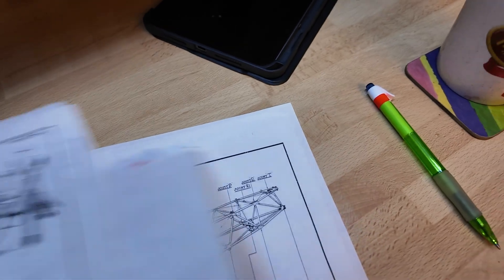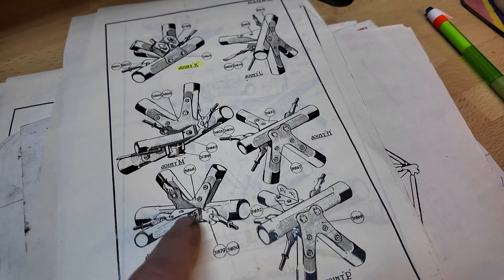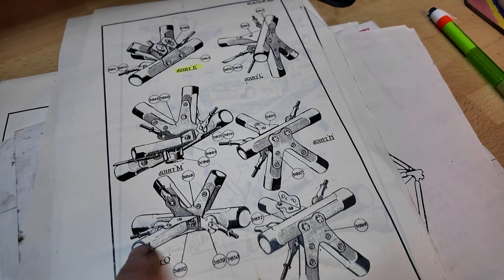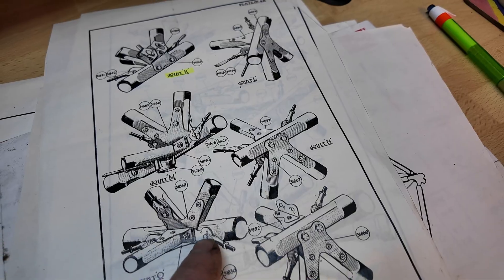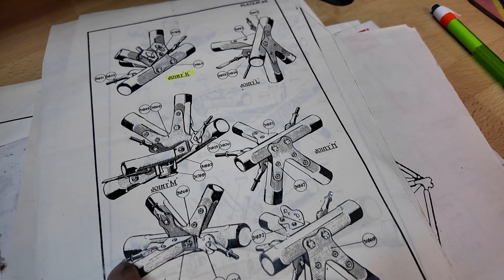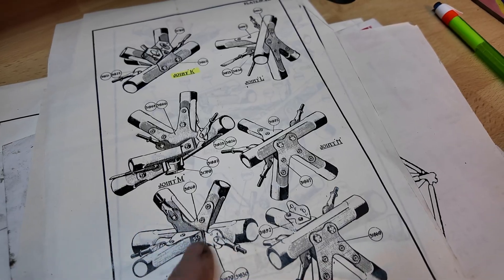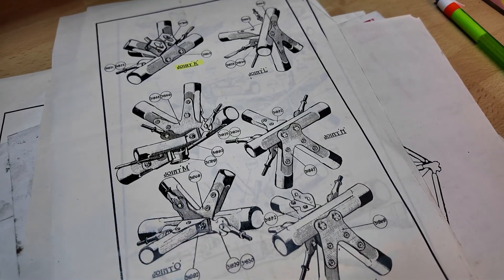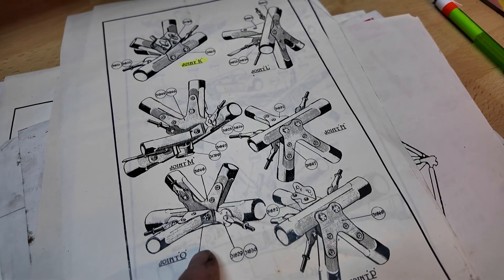So this is joint O. So what you've got is this is OO, which goes between the two O's. And then you've got these lugs for the bracing wires that you see. And there's one there. So you've got three bracing wires come off joint O. And they help true up the aircraft once you've got the datum lines in position.